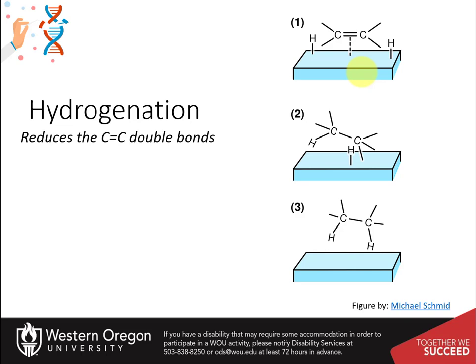Steps in the hydrogenation of a carbon-carbon double bond involve the following: First, the reactants are adsorbed onto the catalyst's surface, and hydrogen dissociates. A hydrogen atom bonds to one carbon atom, while the other carbon atom is still attached to the surface. A second carbon atom then bonds to a hydrogen atom, and the molecule is free to leave the surface.